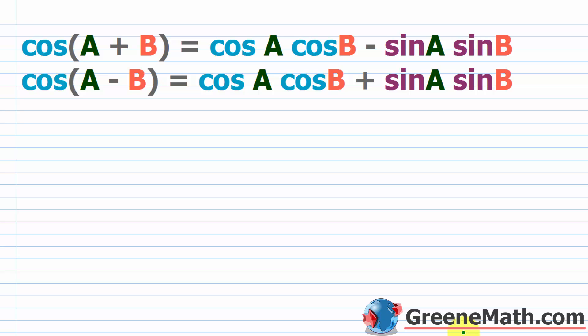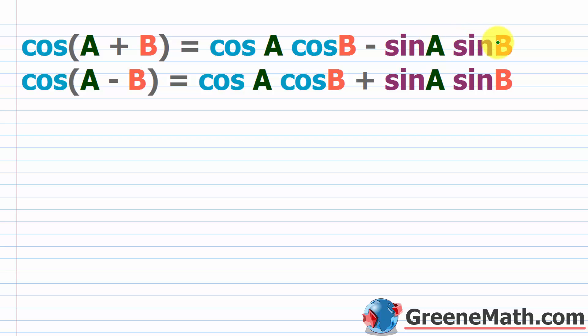This might not be completely intuitive. A lot of students, if they see something like the cosine of A plus B, they might try to distribute the cosine and say this is the cosine of A plus the cosine of B. But that doesn't work.